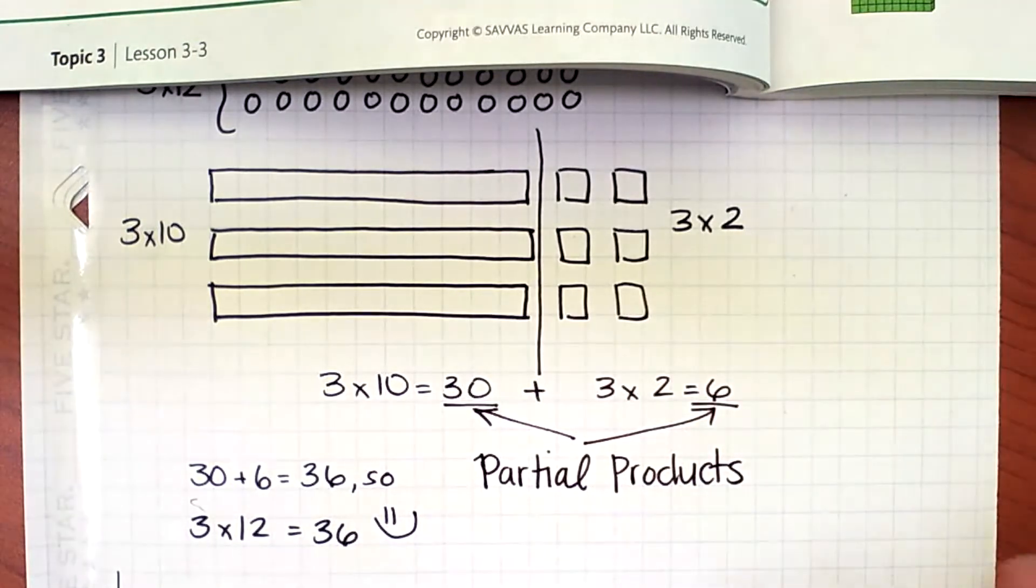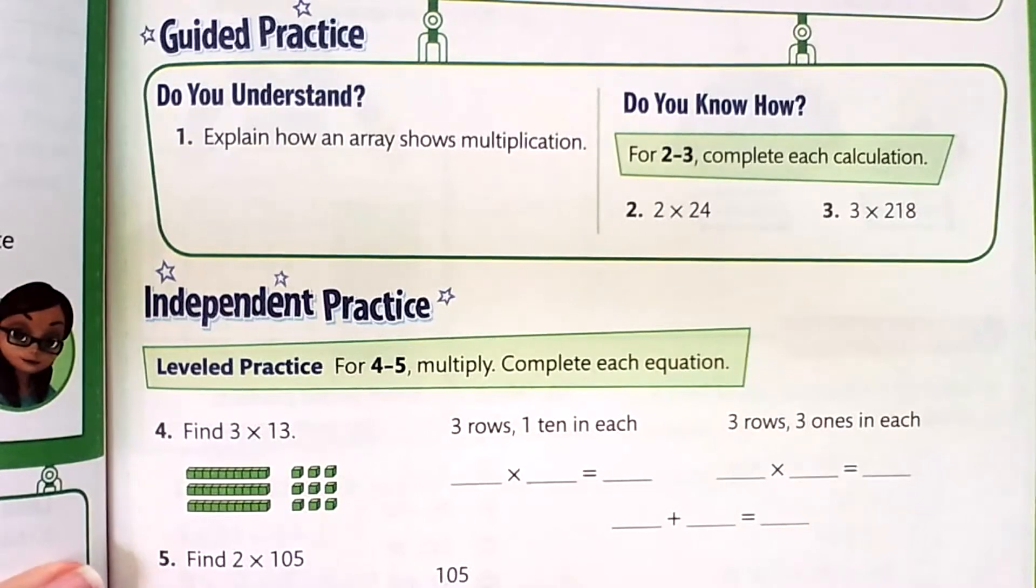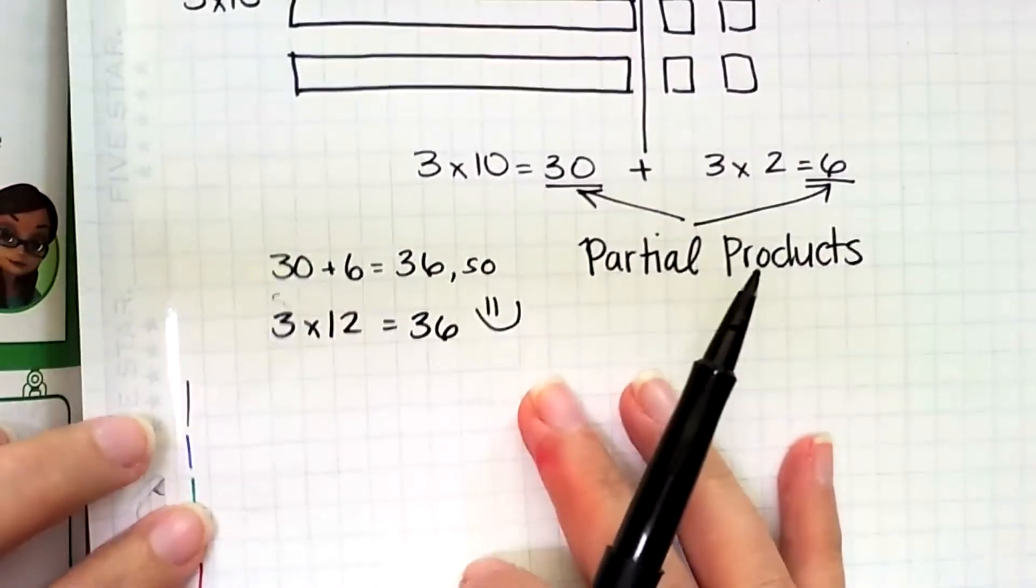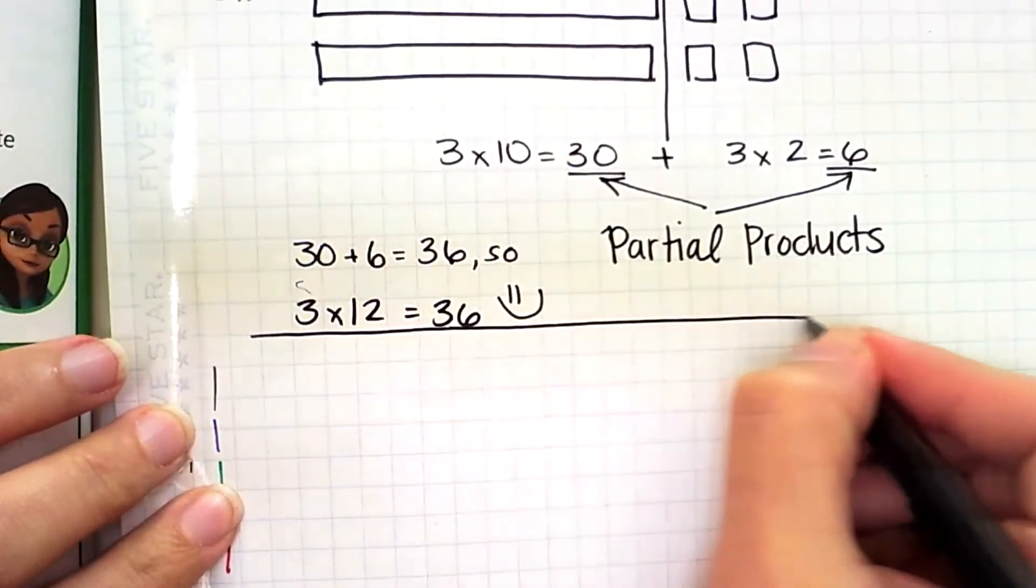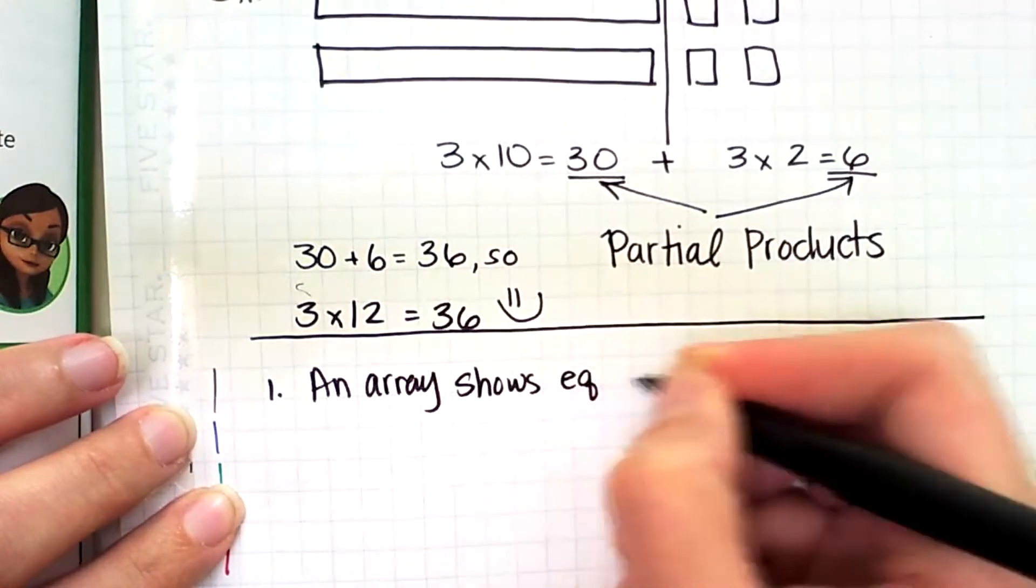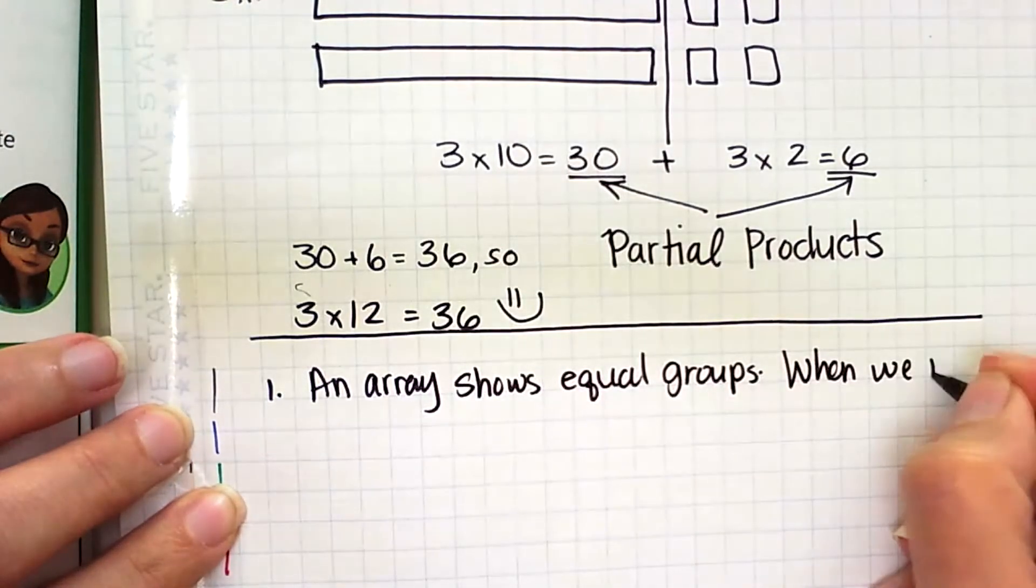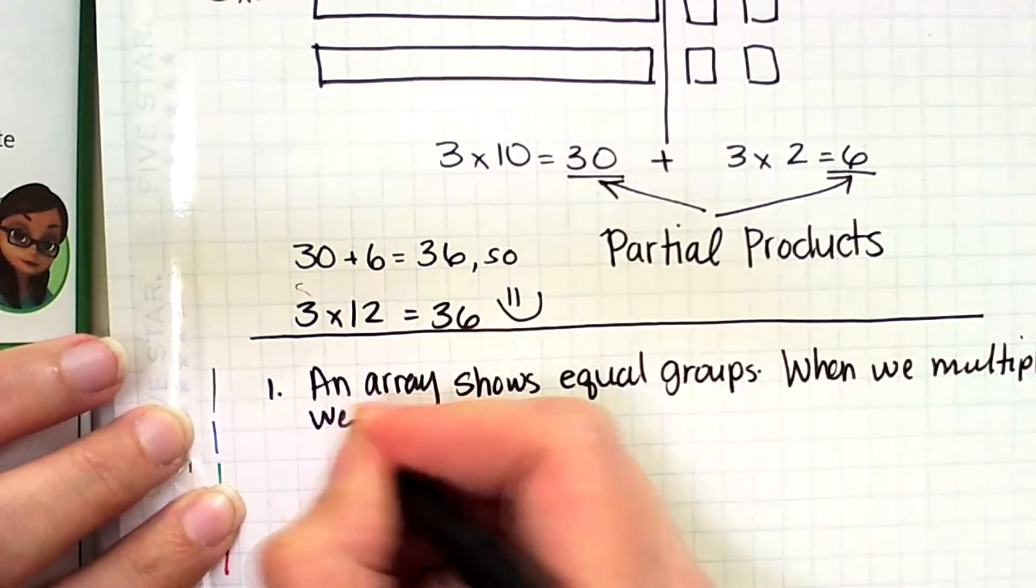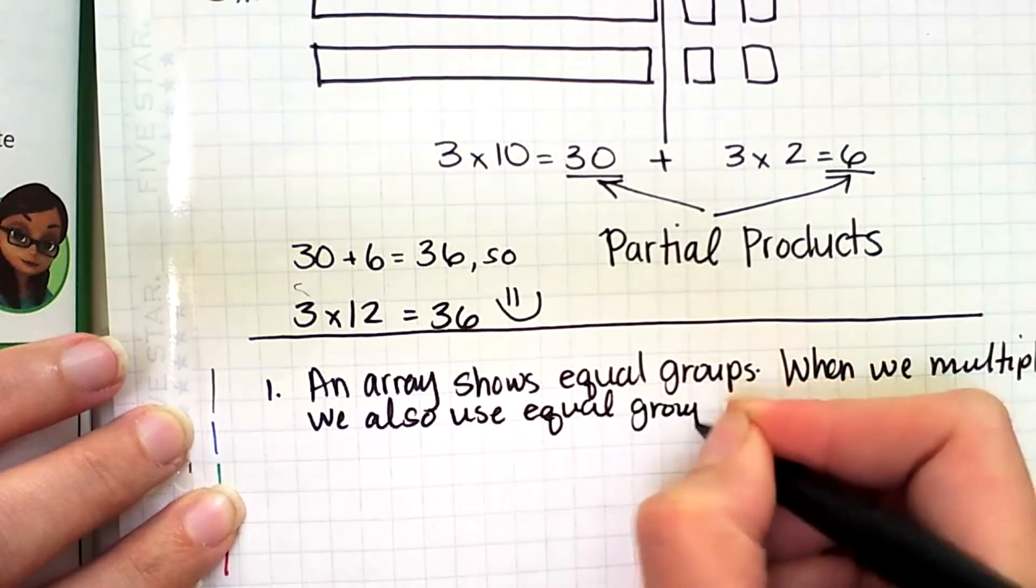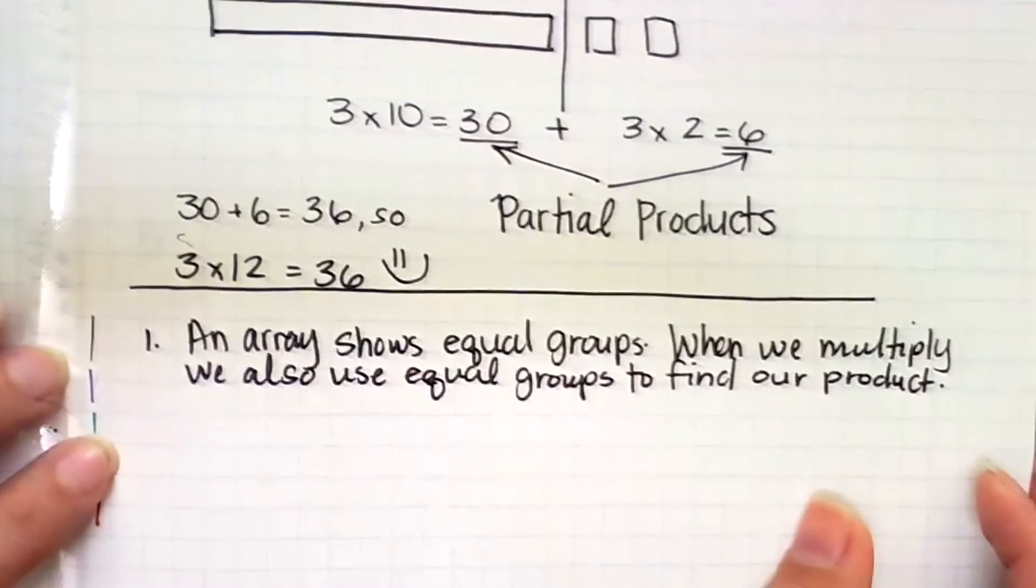Let's jump into our guided practice questions. For number one, it says explain how an array shows multiplication. That's easy. We know that an array shows equal groups. When we multiply, we also use equal groups to find our product.